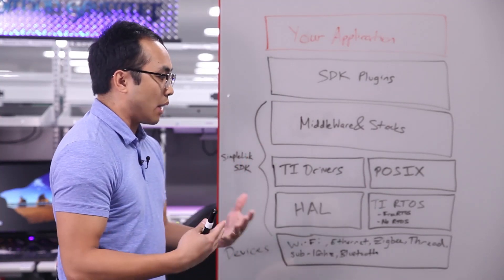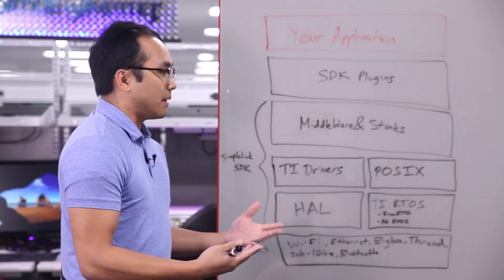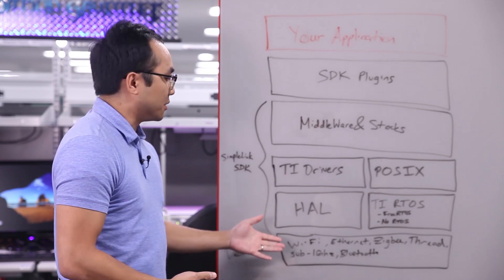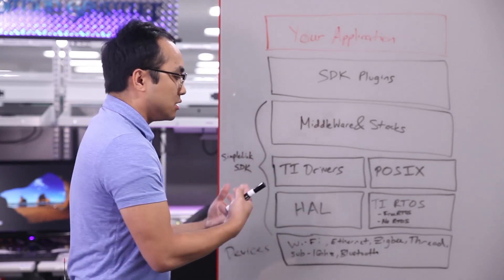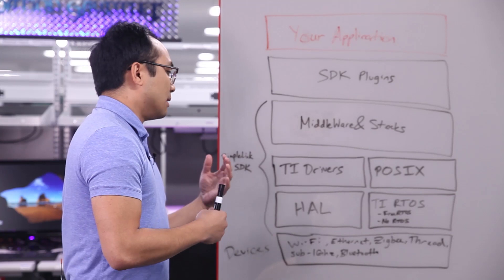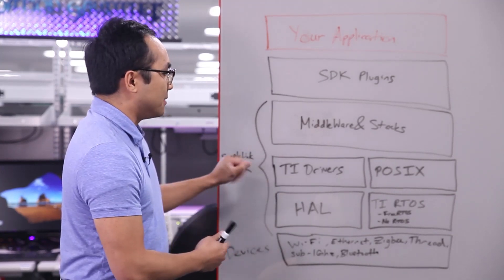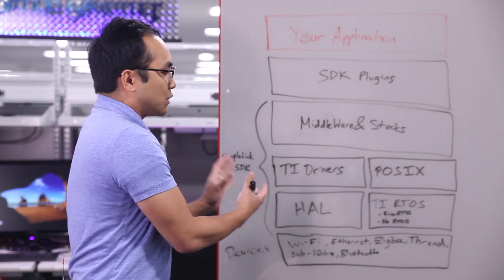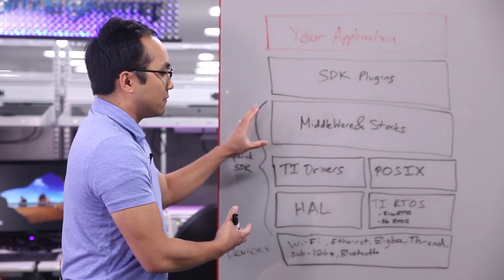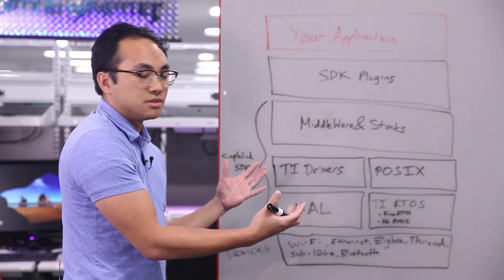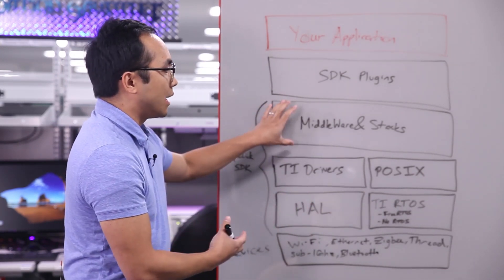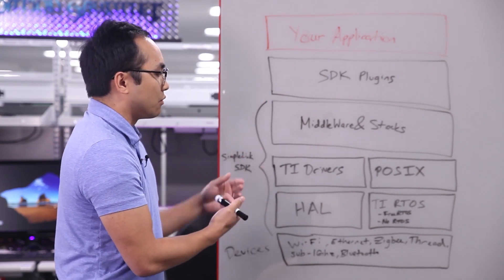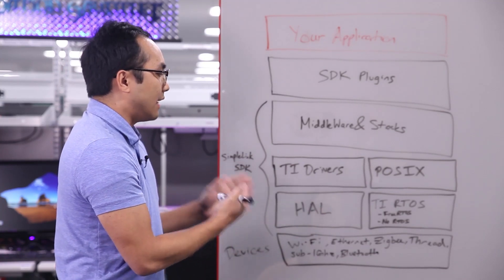A specific use case where that might be useful: consider a Wi-Fi connected thermostat. You'd take our CC32XX — our Wi-Fi enabled microcontroller — and build code for talking to temperature sensors, LCD displays, motor drivers, whatever that might be, leveraging TI Drivers. Once you've built out your thermostat, you can easily reuse that temperature sensor code to build out sub-gigahertz edge nodes. The only difference would be the middleware or stacks, but the application code for reading sensors or talking to a display will be portable.